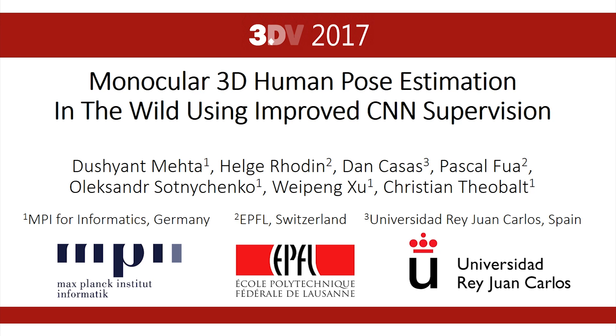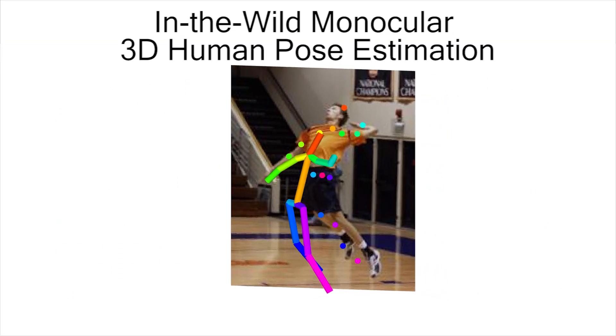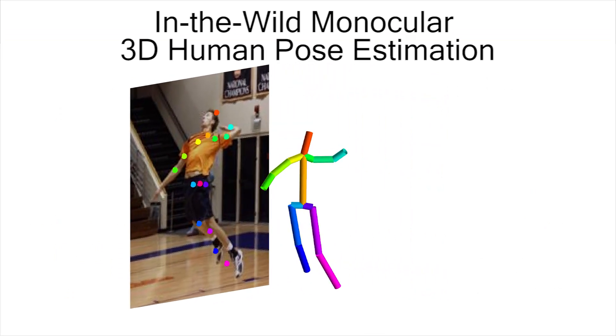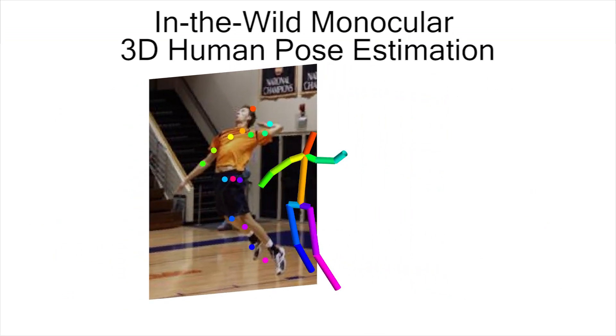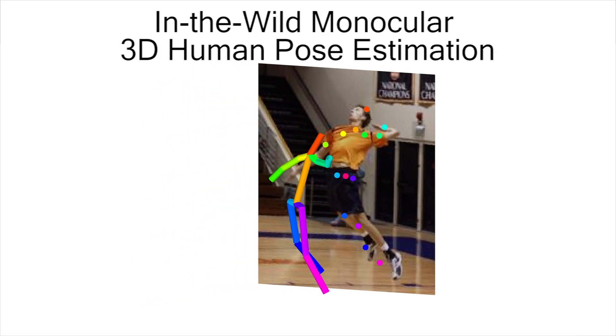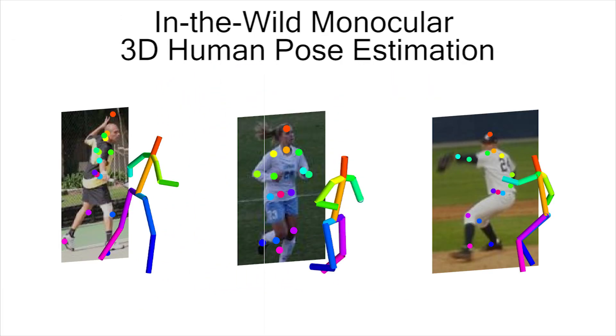We present a new convolutional neural network based method to estimate 3D articulated human poses from a single color image. Our architectural and data supervision contributions enable generalization to in-the-wild input images, showcased here for diverse appearance and backgrounds on the LSP dataset.